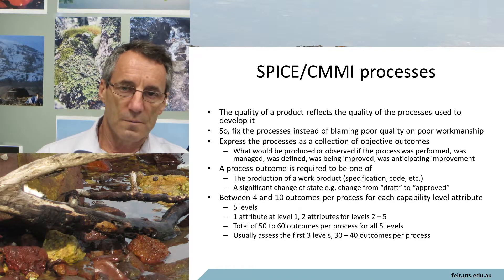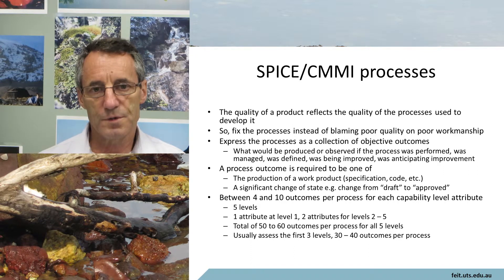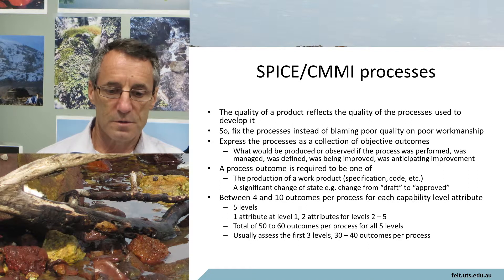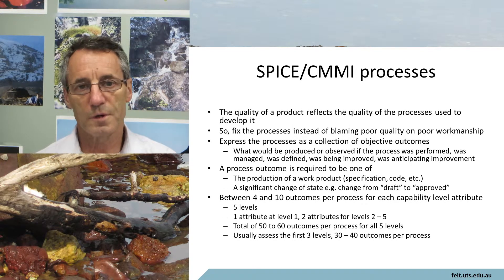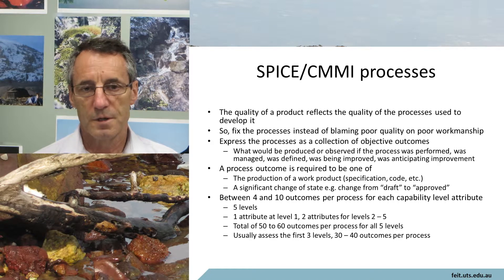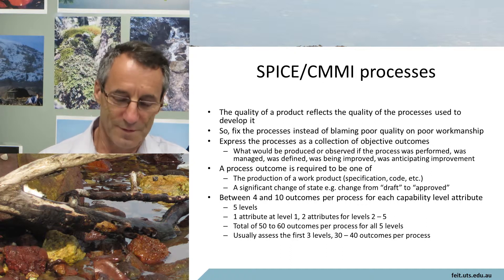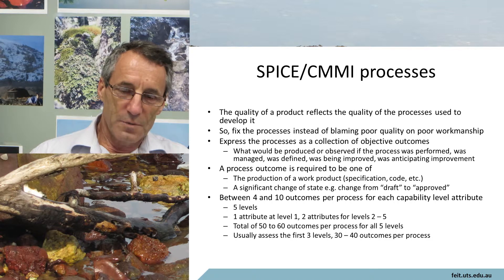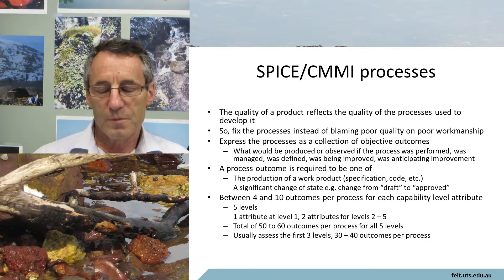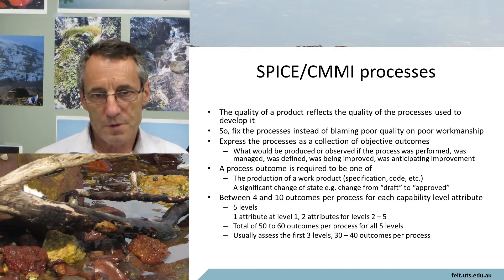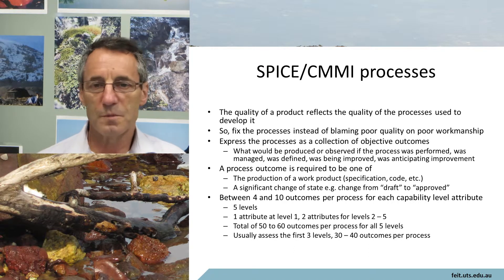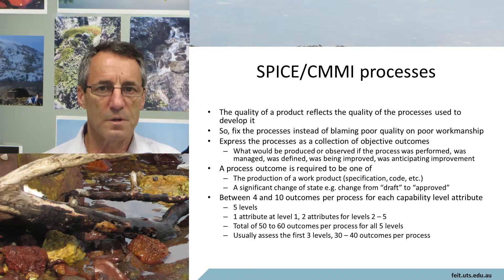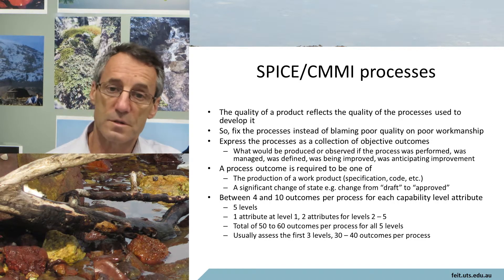This is all based on the assumption that the quality of the product reflects the quality of the processes used to create the product. If there are faults in the product, you'll probably find there are faults in the processes used to create it. The whole idea is to go back and fix the processes as opposed to trying to fix the person who built the thing. Each outcome has to be objectively observable — it can be the production of some artifact, where it either exists and the outcome is satisfied, or it doesn't exist and it's not.